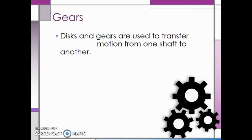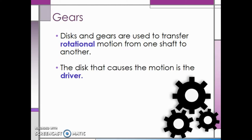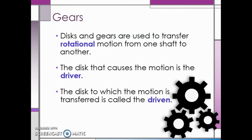Discs and gears are used to transfer rotational motion from one shaft to another. The disc that causes the motion is the driver, and the disc to which the motion is being transferred is called the driven. Driver and driven are both terms we will be using frequently throughout this section.